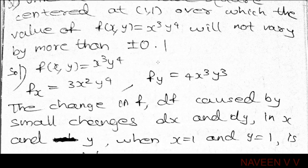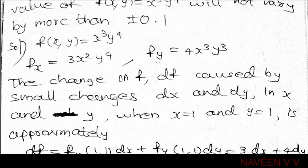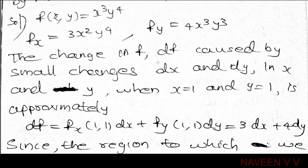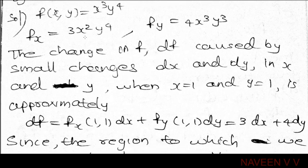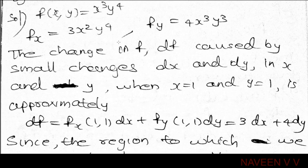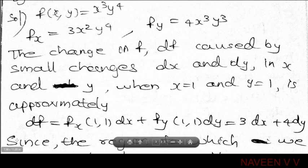For f(x,y) = x³y⁴, the partial derivative with respect to x is fx = 3x²y⁴, and the partial derivative with respect to y is fy = 4x³y³. The change df is calculated using df = fx(1,1)dx + fy(1,1)dy.